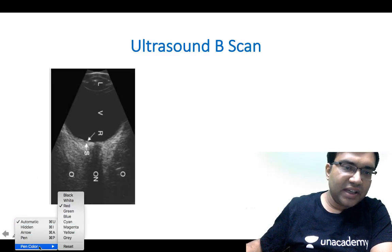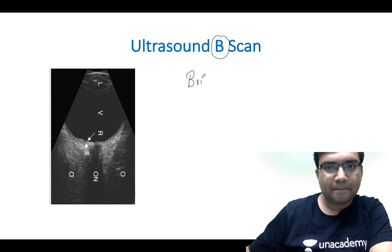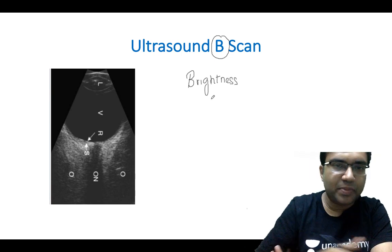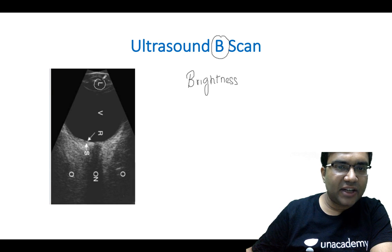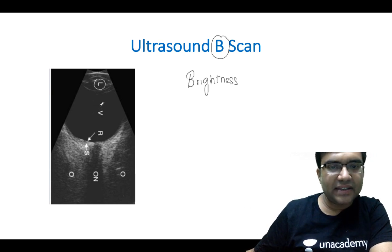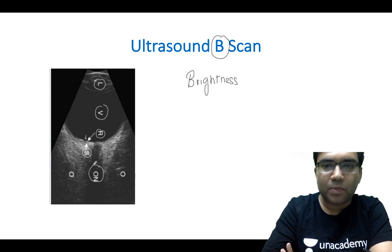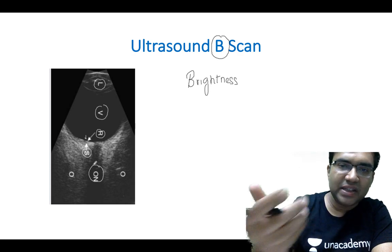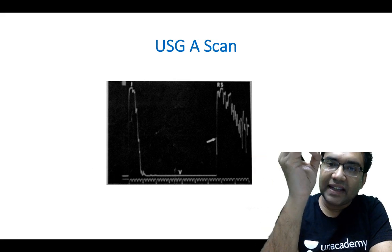The 'B' in B-scan means brightness. In the B-scan image you can appreciate the shadow of the lens, then the black area which is the vitreous, followed by the layers — the retina and the sclera. The black shadow you see here is caused by the optic nerve head. This basically shows a B-scan of a normal eye.